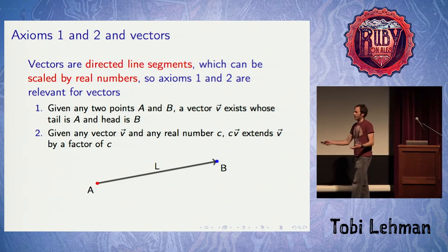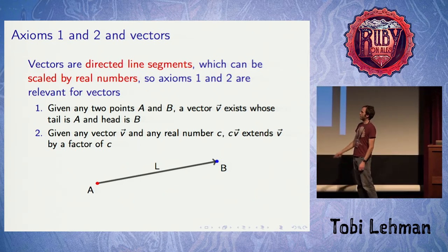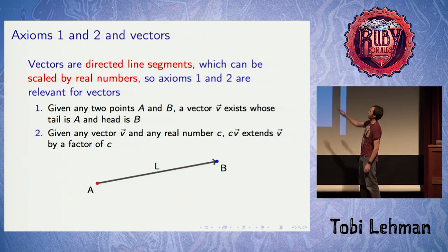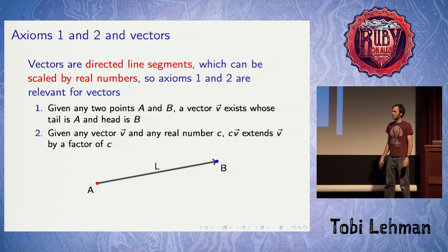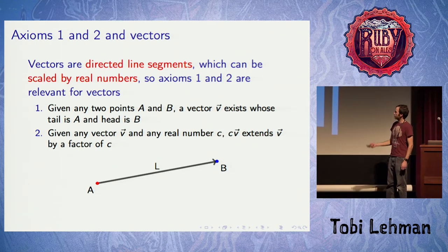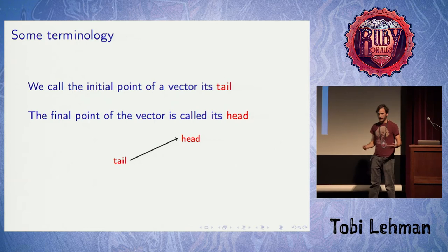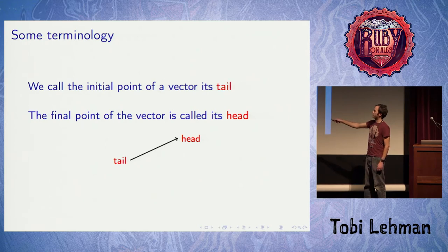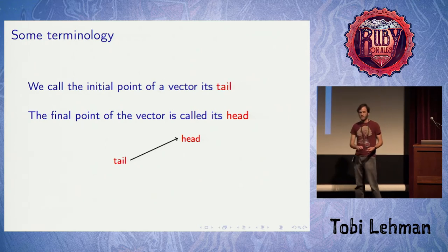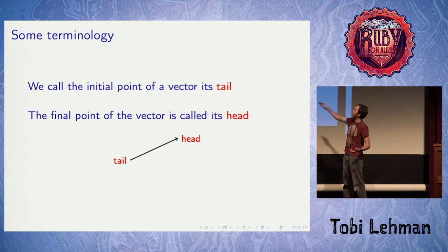We're going to be using vectors, and vectors are just directed line segments. They also have the ability to be scaled by a real number — we can take some vector V and scale it by multiplying by a real number. You can see the connection to the first two axioms right away. The arrowhead part we'll call the head of the vector, and the other end is the tail. You can think of vectors as representing a displacement from the tail to the head.